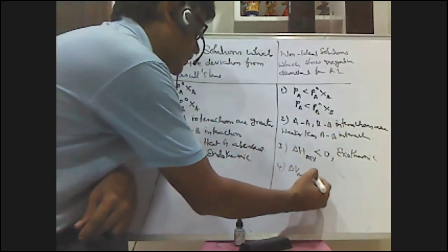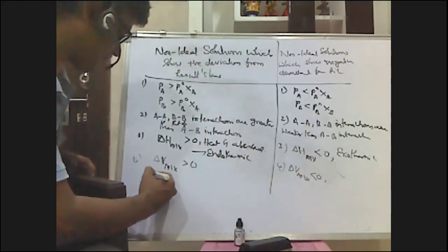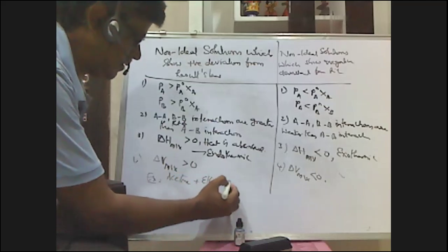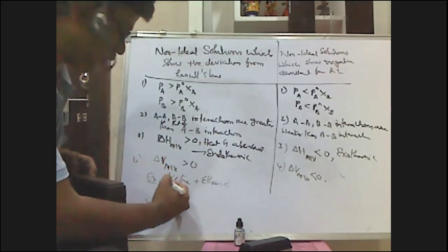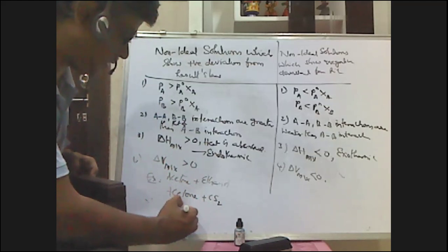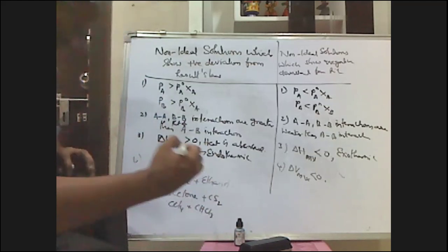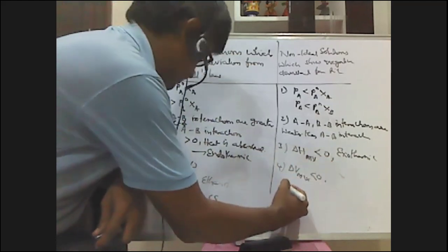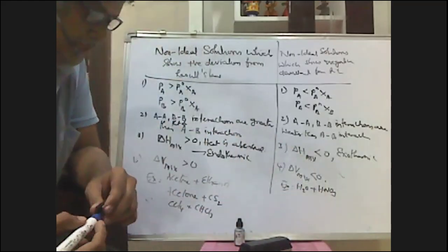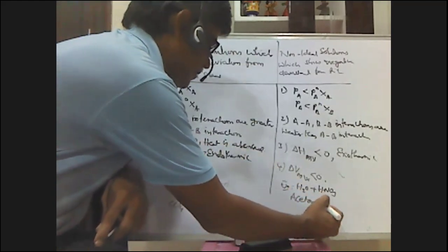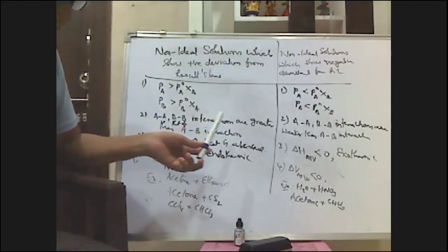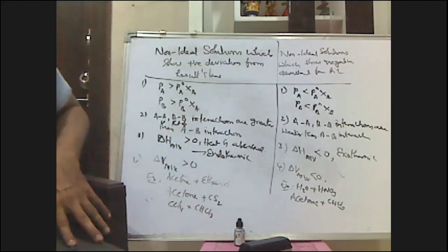The last characteristic is that ΔV mixing is less than zero. Examples for positive deviation include acetone plus ethanol, acetone plus carbon disulfide (CS₂), and CCl₄ plus chloroform. Examples for negative deviation include water plus nitric acid (H₂O + HNO₃), acetone plus chloroform, and acetone plus aniline.